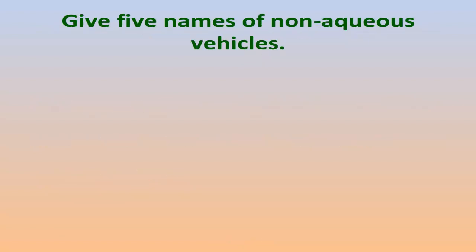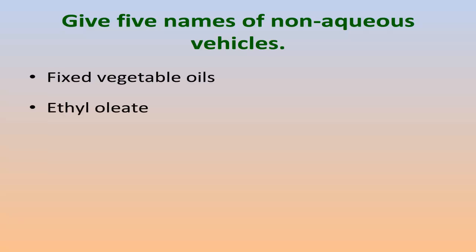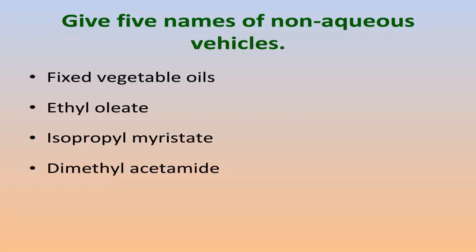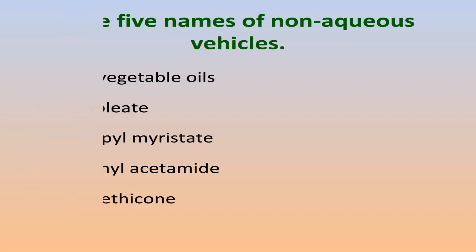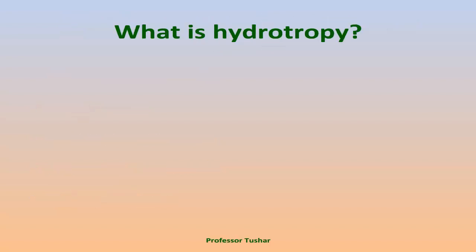Give five names of nonaqueous vehicles: fixed vegetable oils, ethyl oleate, isopropyl myristate, dimethyl acetamide, and simethicone. What is hydrotropy?